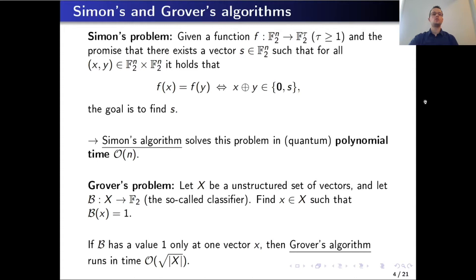Simon's and Grover's algorithms are used to solve the Simon's problem and Grover's problem. The Simon's problem is stated as follows: we observe a vectorial Boolean function f defined on n-bit vector space F2^n, and we assume f satisfies f(x) = f(y) if and only if either x equals y, or they differ by a non-zero vector s. The problem is to find the vector s. Simon's algorithm solves this in polynomial time, which depends on the number of input variables of f.